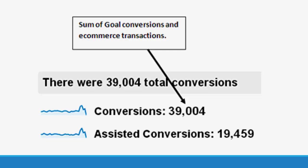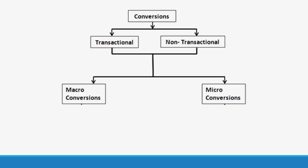Both transactional and non-transactional conversions can be further classified into macro and micro conversions. The major purpose of setting up a website is known as macro conversion, and other minor purposes are known as micro conversions. For example, if your main purpose of setting up a website is to generate sales, then the number of e-commerce transactions is your macro conversion. Other minor purposes like newsletter sign-up, building user engagement, and providing customer support are your micro conversions.